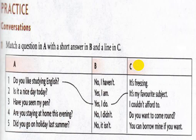'Is it a nice day today?' — 'No, it isn't. It's freezing.' Because we started with 'is' and the short answer is negative. 'Have you seen my pen?' — 'No, I haven't. You can borrow mine if you want.' We answer with 'haven't' because the question started with 'have'.